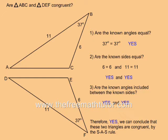Question 2 says, are the known sides equal? Both triangles have a 6 unit side and both triangles have an 11 unit side. So yes, the known sides are equal.